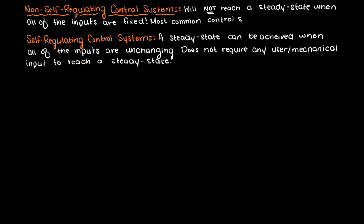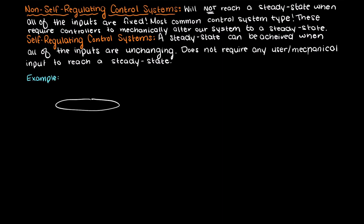This is the most common control system we will run into throughout this control systems course, as these systems require controllers to mechanically force our system to our desired steady state. So let's give a few examples of non-self-regulating systems so that we really understand what a non-self-regulating control system is.